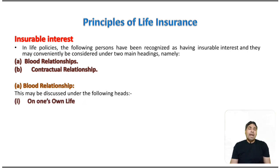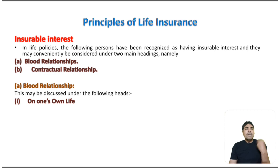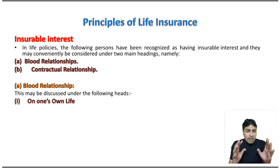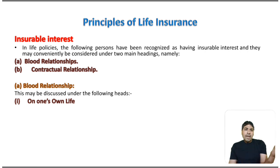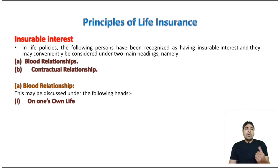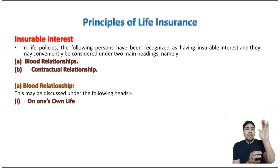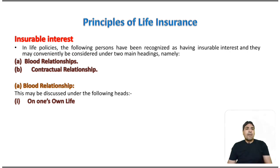In blood relationship, the first head is on one's own life. Each and every person is having an insurable interest in their own life. If A's death happens, then the first and foremost loss is to A himself. So A has insurable interest in A's life, I have insurable interest in my life, you have insurable interest in your life.